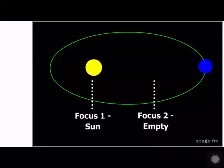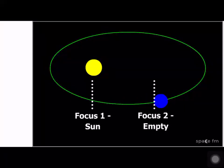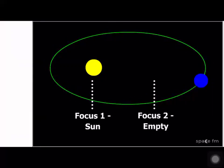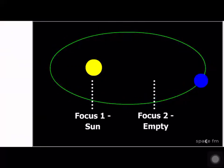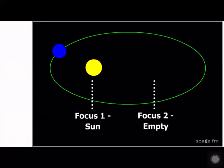Looking at the diagram of the planet rotating around the sun, there is an empty focus as well. Because of the mathematical shape of an ellipse, we identify two focus points — focus one and focus two. The sun is at focus one.